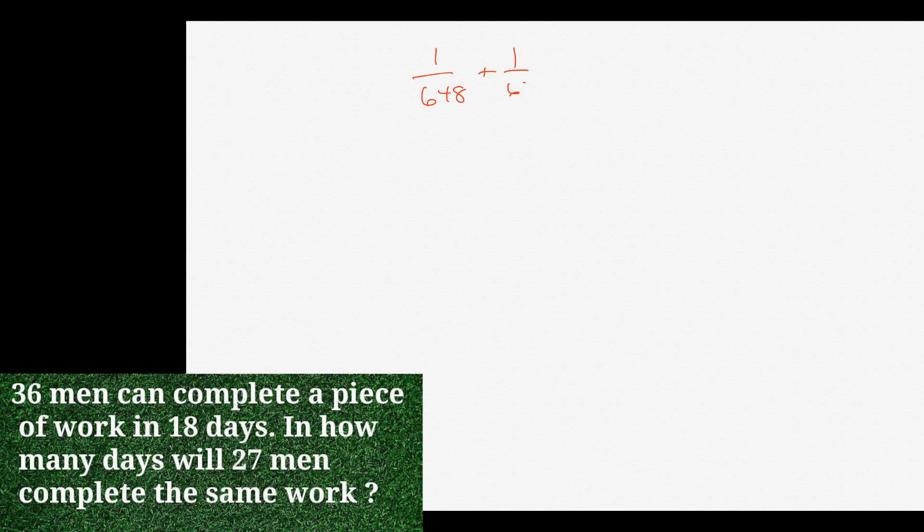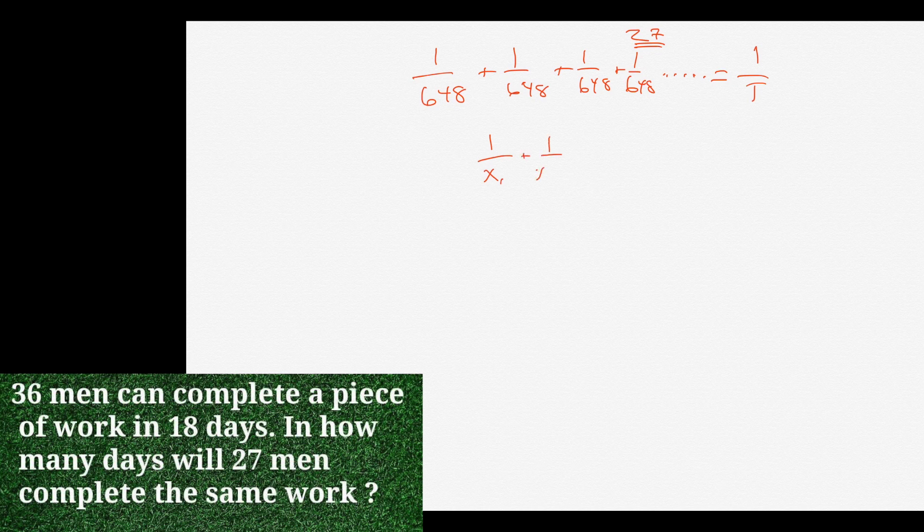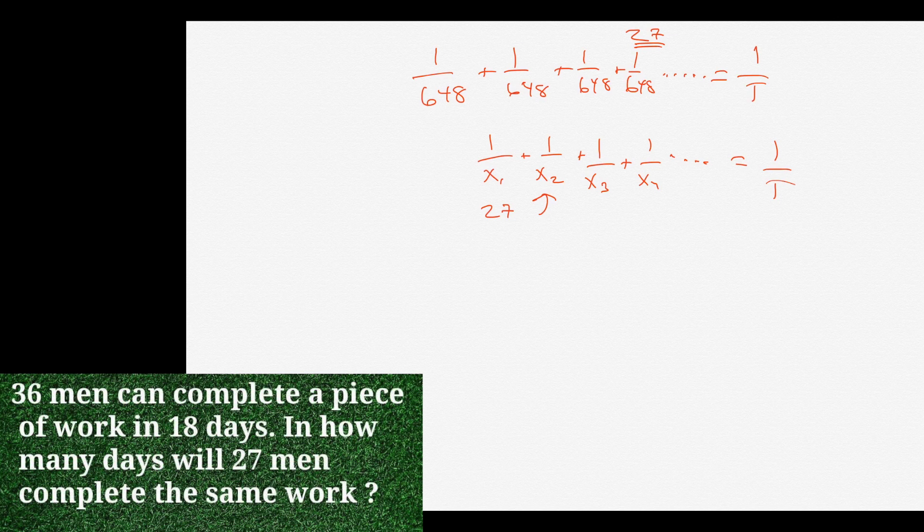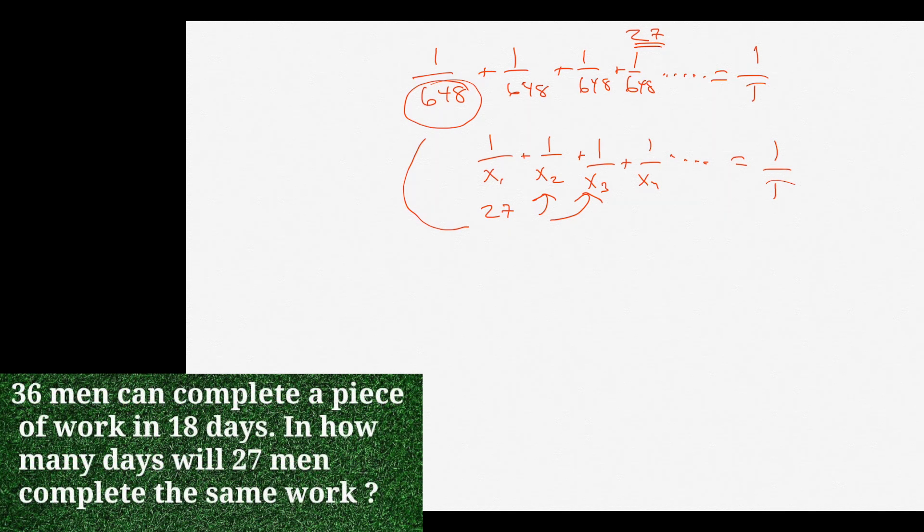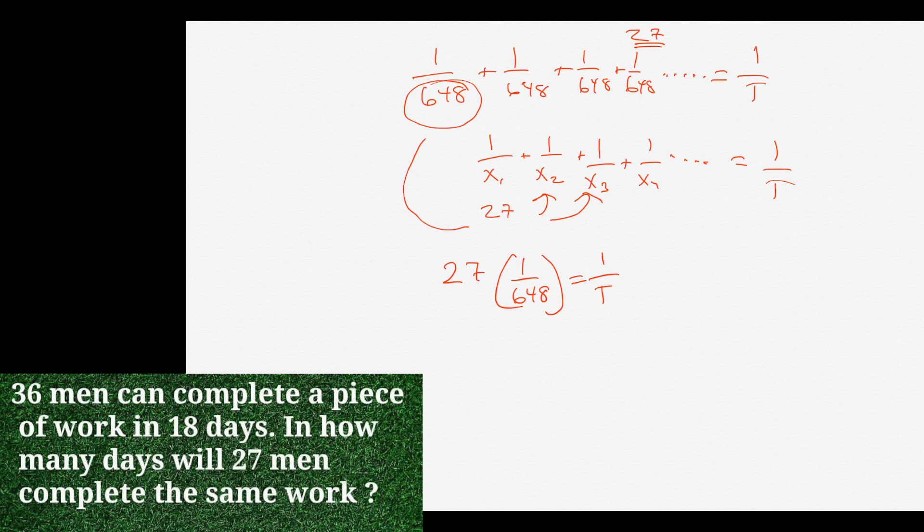So, the call of the question is, how many days will 27 men take to do this? So, we then have 1/648 plus 1/648 plus 1/648, we have this 27 times, and that's going to equal 1/t. And it's all because of that formula. It just so happens that we have 27 of these. And it's a little easy because we know each of them are the same, so they're like machines. They each take 648 days if they did it on their own. So, we're going to have 27 times 1/648, then equals 1/t. And now, we can cross multiply. So, we'd have 27/648 equals 1/t, so we cross multiply. We're going to get 27t equals 648.